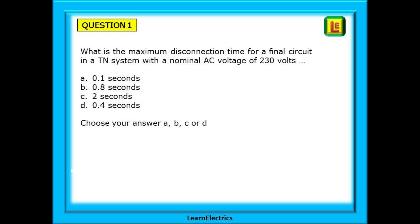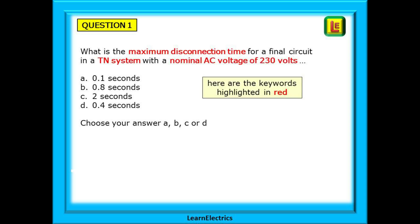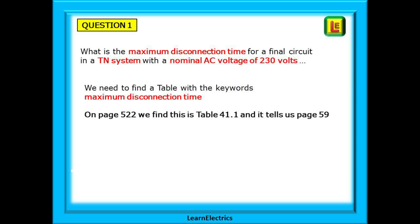The question asks: what is the maximum disconnection time for a final circuit in a TN system with a nominal AC voltage of 230 volts? And here are your four choices. Begin by looking for the keywords — one of these keywords will show you which table you need. What is the question asking for? Maximum disconnection time. We need to find a table with the keywords 'maximum disconnection time'. And on page 522, we find that this is Table 41.1, and it tells us to go to page 59.